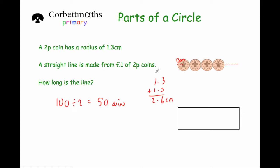So if we want to find how long the line is, we need to do 2.6 centimeters times by 50. So 2.6 multiplied by 50. And to do that, we're just going to multiply here. So we're going to multiply by 50. So let's put the zero down.